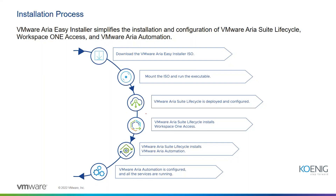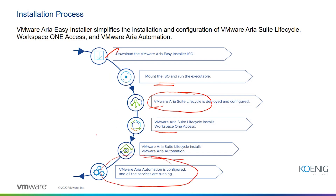All three products are considered appliances — you need to install three different appliances to run ARIA Automation: ARIA Suite Lifecycle Manager, Workspace ONE Access, and the ARIA Automation appliance. This is similar to how vCenter Server 6.7 and earlier required a PSC appliance plus the vCenter Server appliance. For ARIA Automation 8.10, you install Workspace ONE Access version 3.3.4 and ARIA Suite Lifecycle Manager version 8.10.0.6. The installer then installs the components and you configure ARIA Automation using its service components.